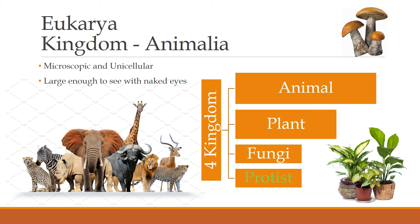The next kingdom is the protist kingdom. The protist kingdom includes all of the microscopic unicellular organisms that are not a member of archaea or bacteria. They include microscopic and macroscopic organisms such as amoeba, diatoms, algae and seaweeds. So all the archaea and bacteria belong to the prokaryote cell, and eukarya belongs to the eukaryote cell.